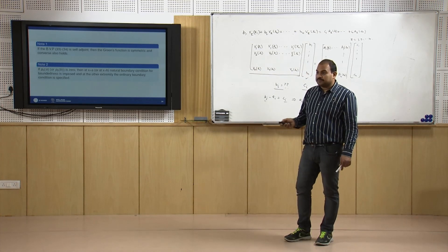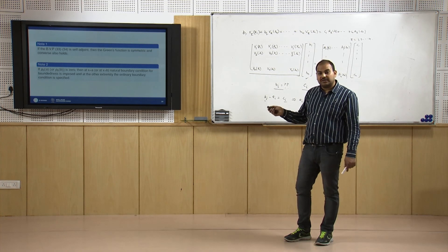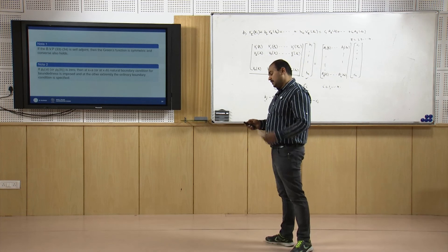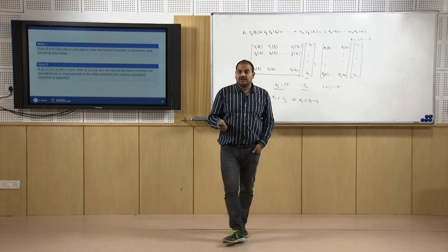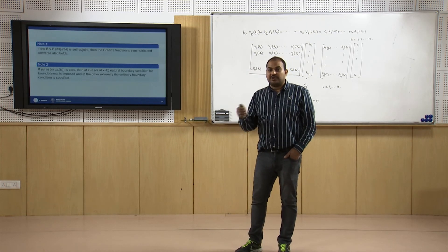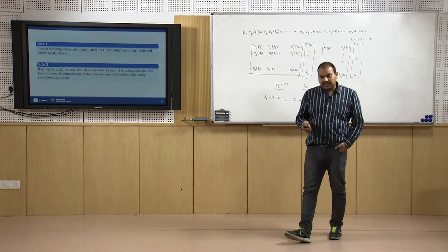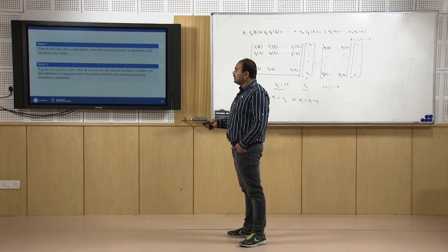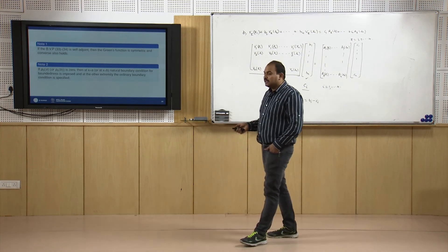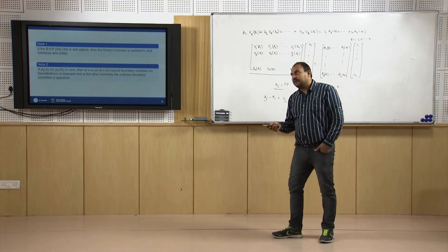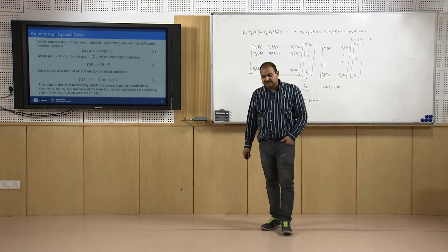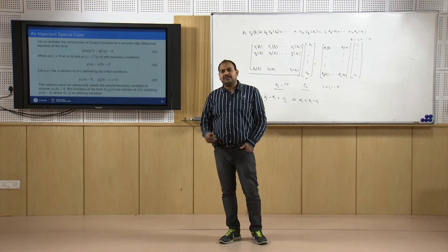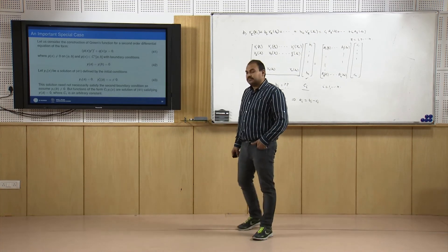If the boundary value problem is self-adjoint, the Green function is symmetric, and the converse is also true. If the highest-order coefficient p₀ vanishes at an endpoint a or b, we impose the natural condition that the solution is bounded at that endpoint. In this lecture, we have generalized the construction of the Green function to a general nth order linear differential equation. Thanks for listening.